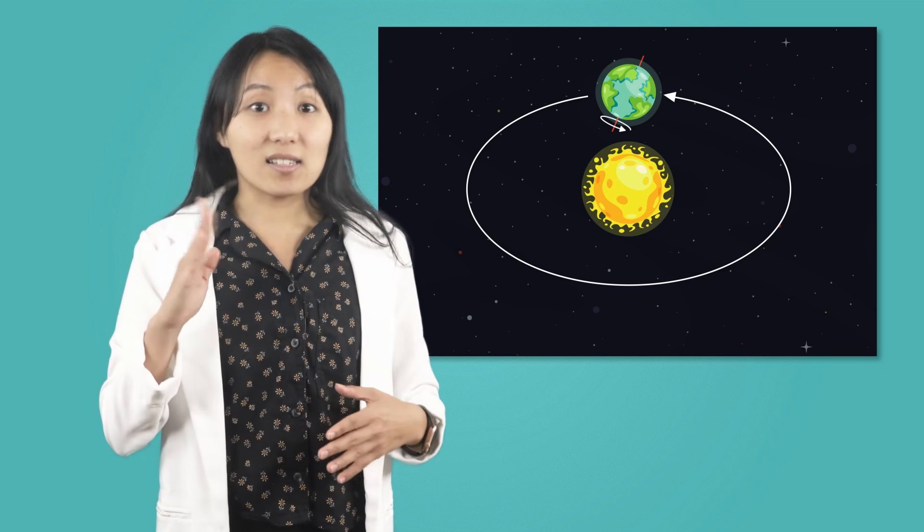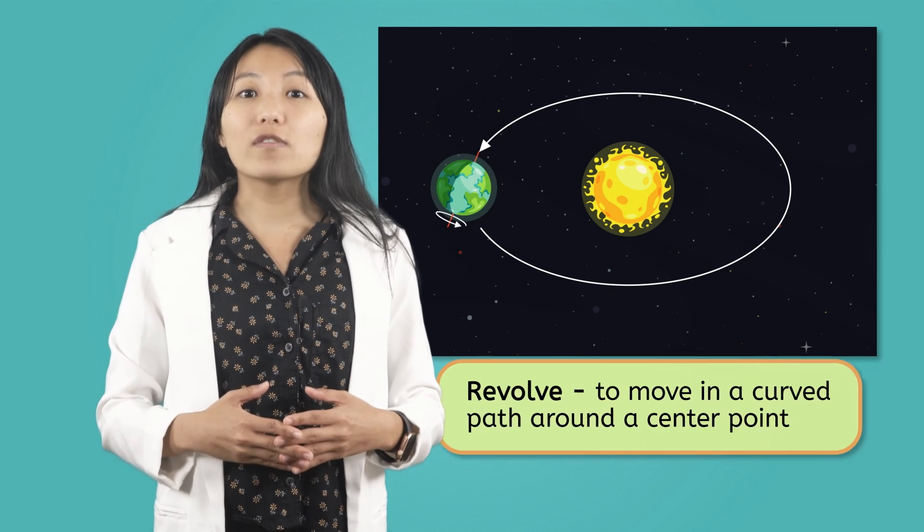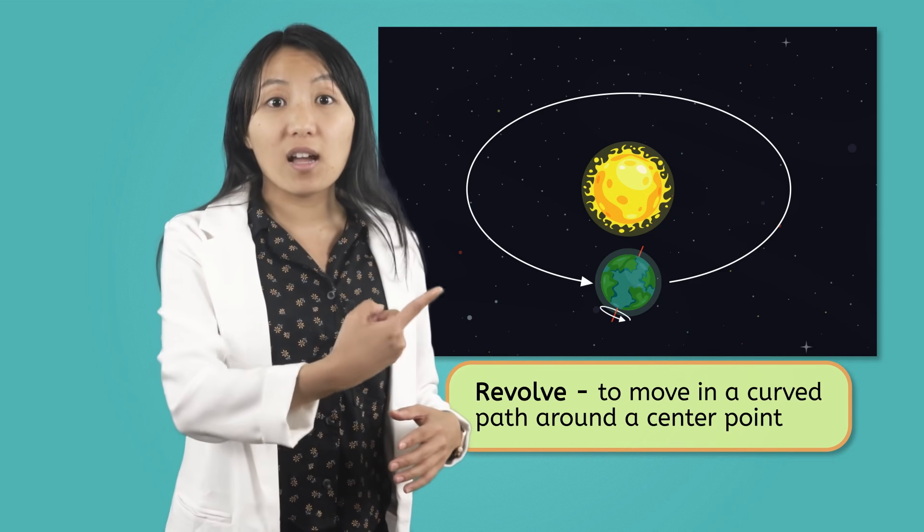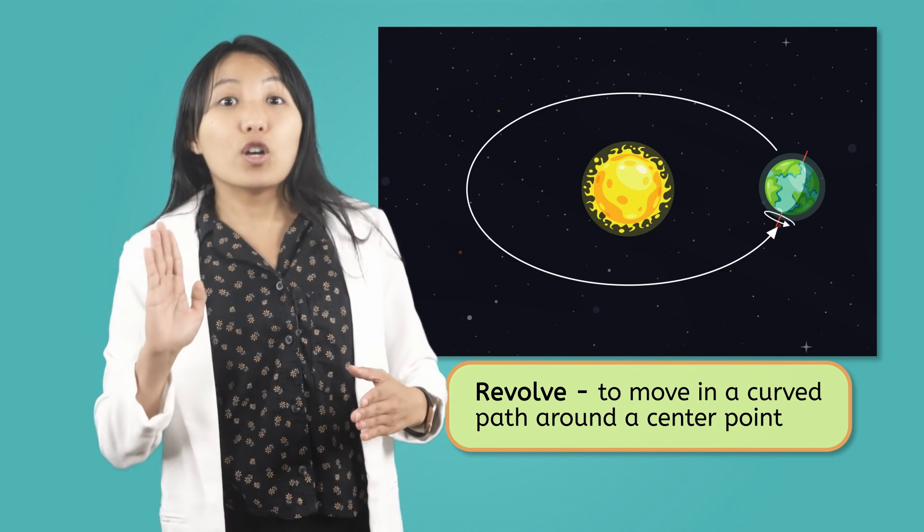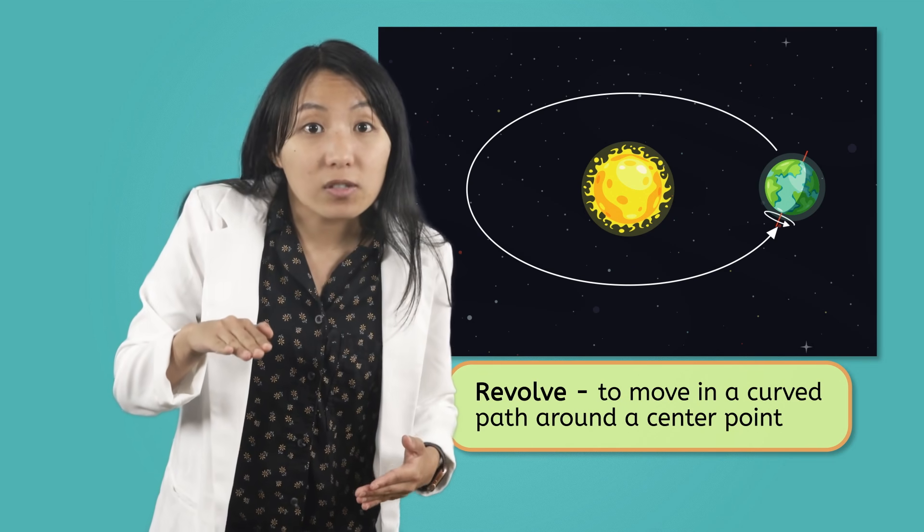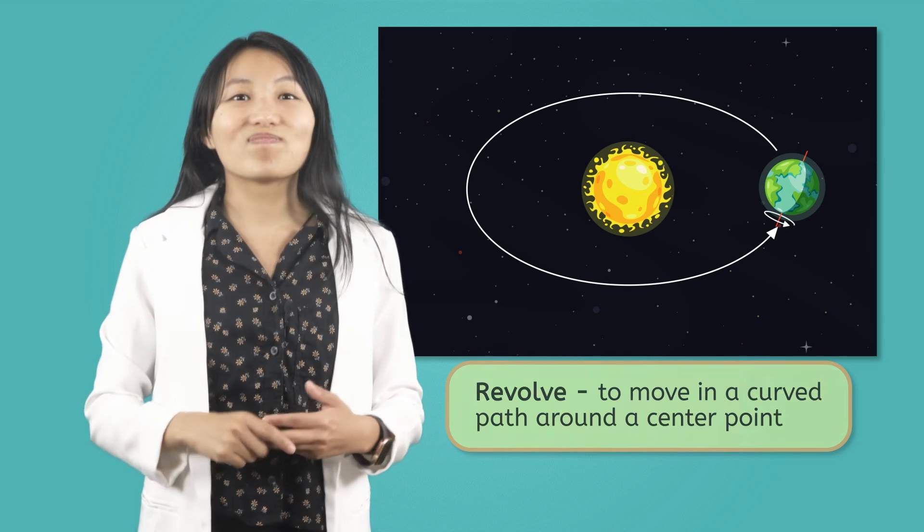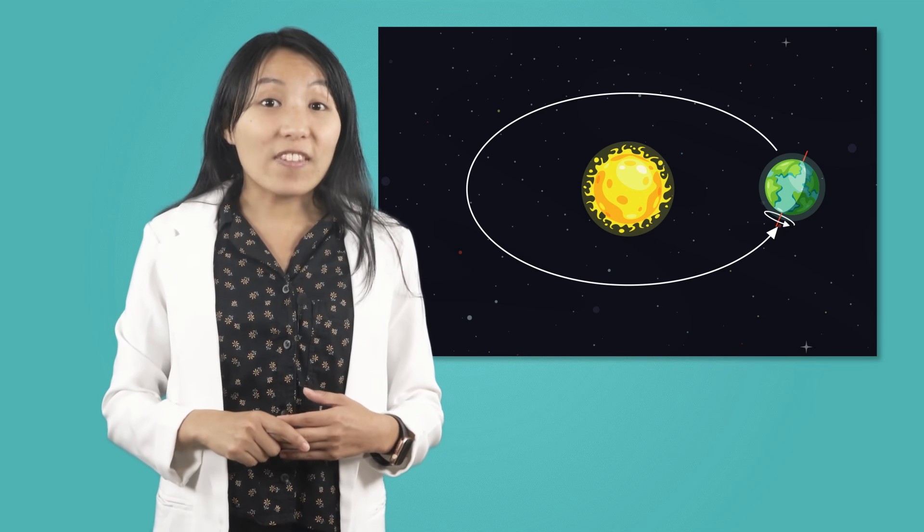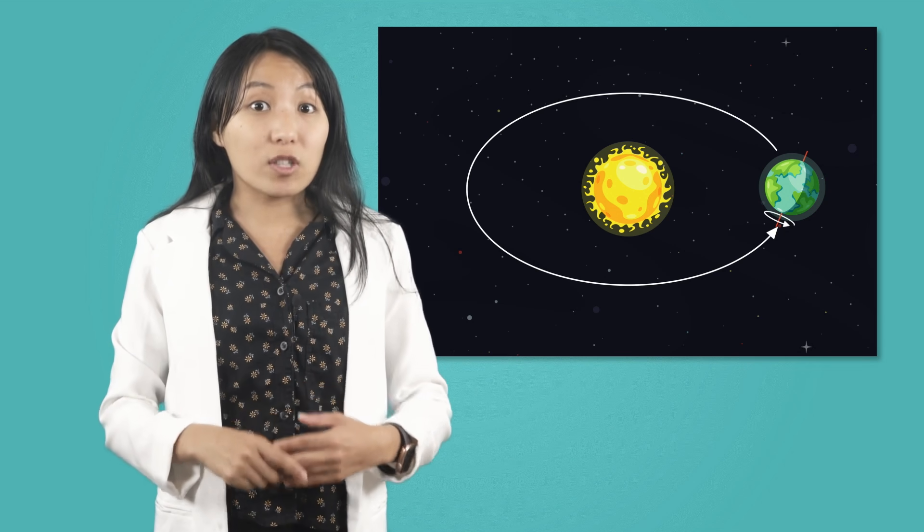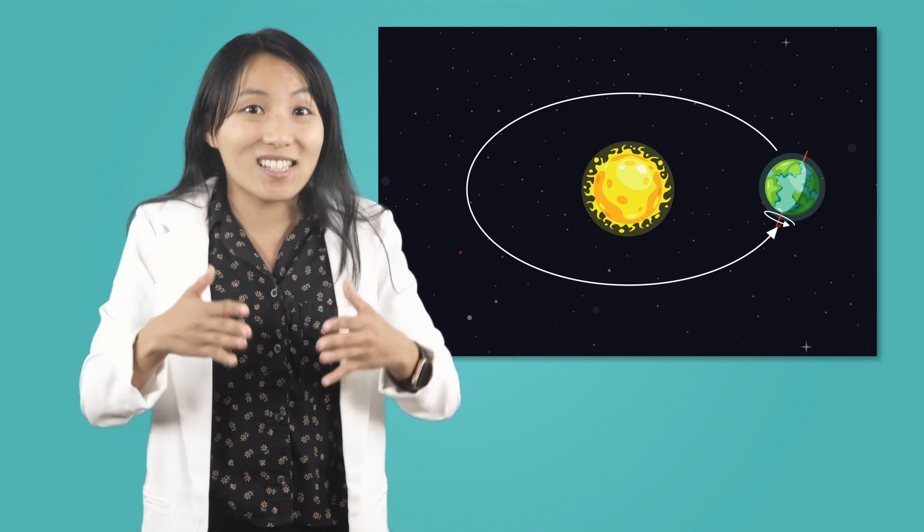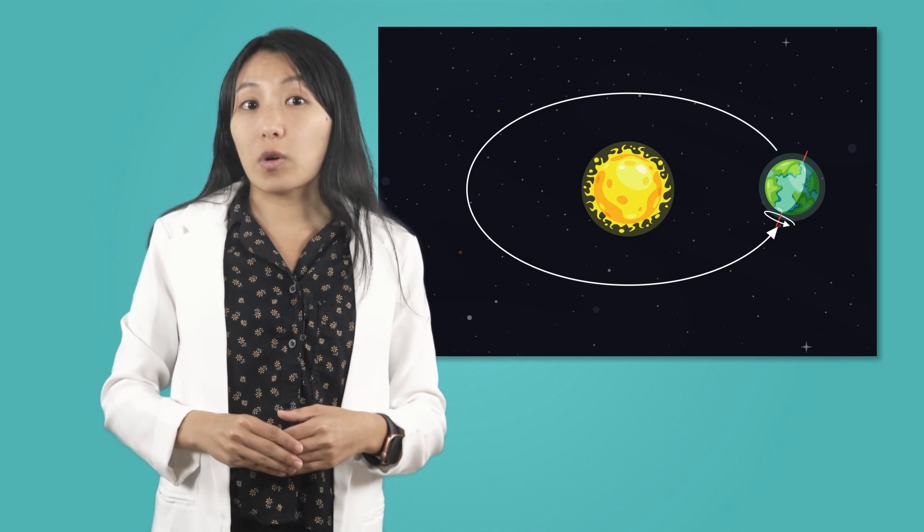Since the axis is tilted, as Earth revolves, or moves around the Sun, certain parts of Earth are tilted toward the Sun, and other parts are tilted away from the Sun. This means that the part of the Earth that receives the most direct sunlight changes throughout the Earth's orbit.